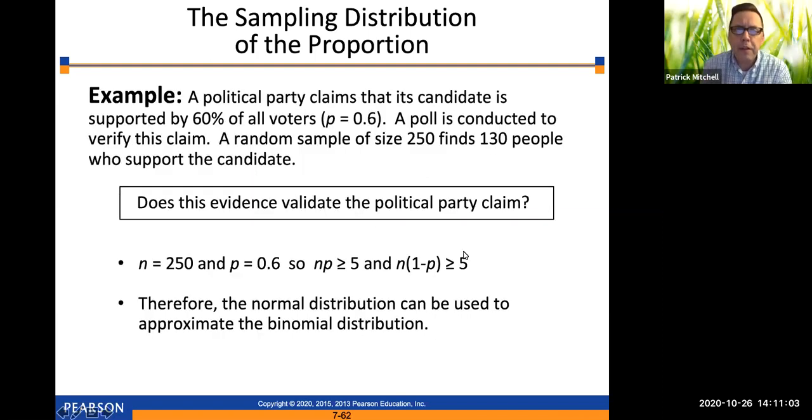All right, so here's an example of how this works. A political party claims that its candidate is supported by 60% of all voters, which means p equals 0.6. A poll is conducted to verify this claim. A random sample of size 250 finds 130 people who support the candidate. Does this evidence validate the political party's claim? So first we'll check for the requirements to use the normal approximation to the binomial. Since n is 250 and p is 0.6, n times p and n times 1 minus p are both going to be at least 5. Therefore, the normal distribution can be used to approximate the binomial distribution.